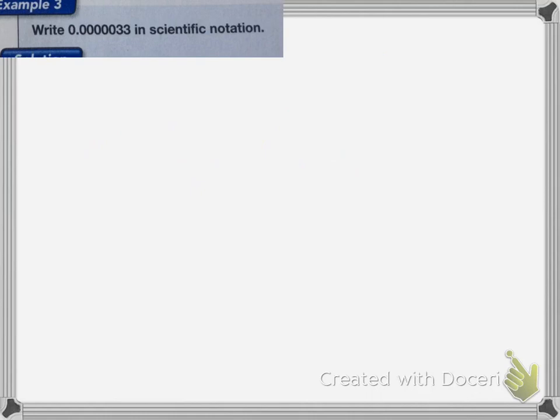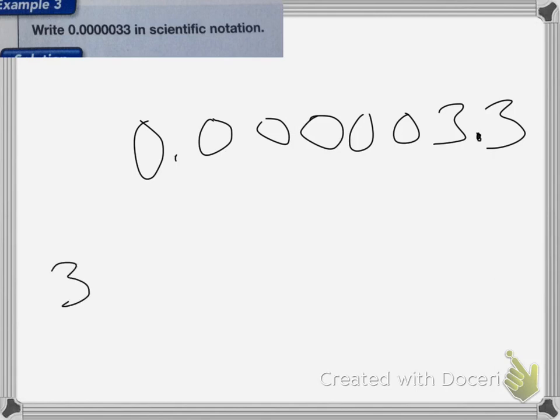This next one wants me to write this in scientific notation. So I'm going to take the number, and I'm going to be putting my decimal after the 3. So it's going to be 3.3 times 10 to a negative power.